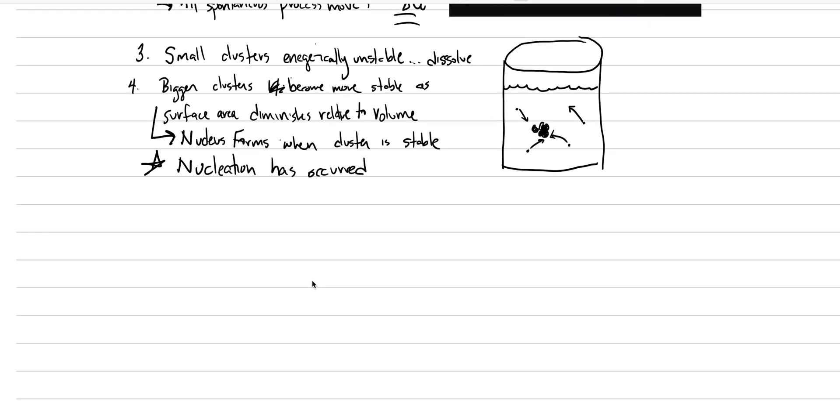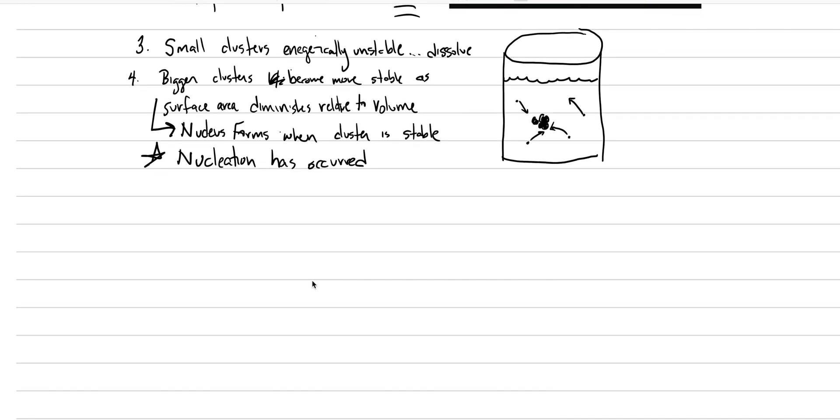Next, we need to have growth occur. Well, growth is actually a lot simpler because growth just requires material moving to the already established nucleus. So let's just say five, growth.